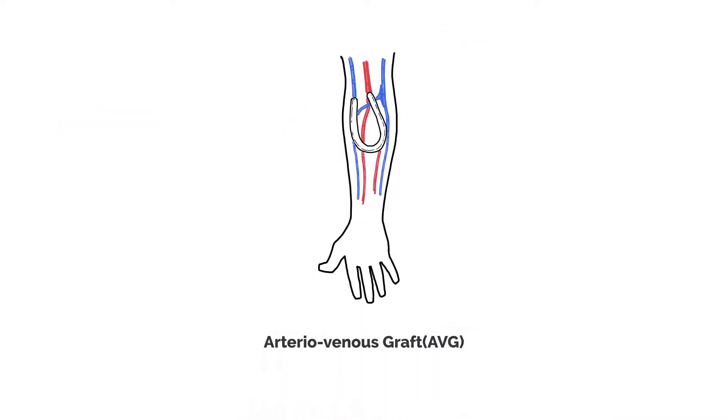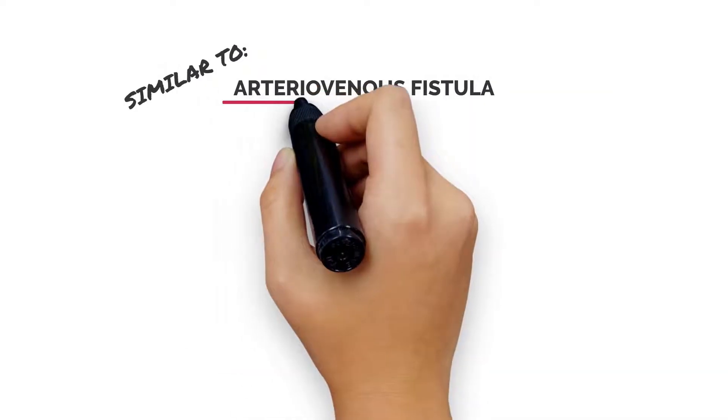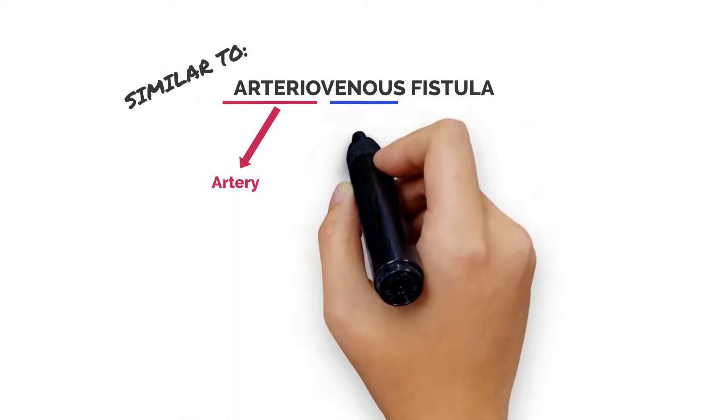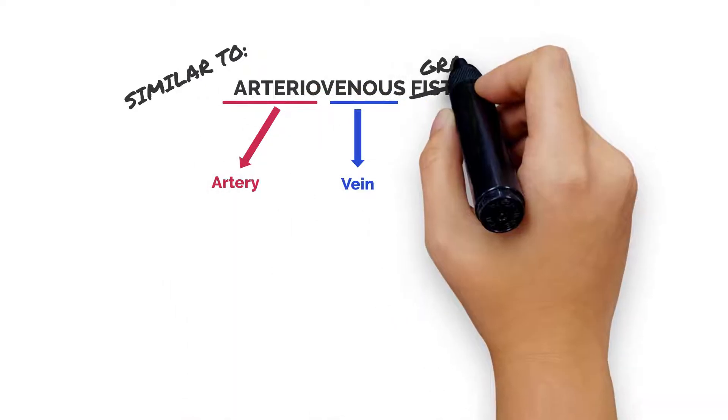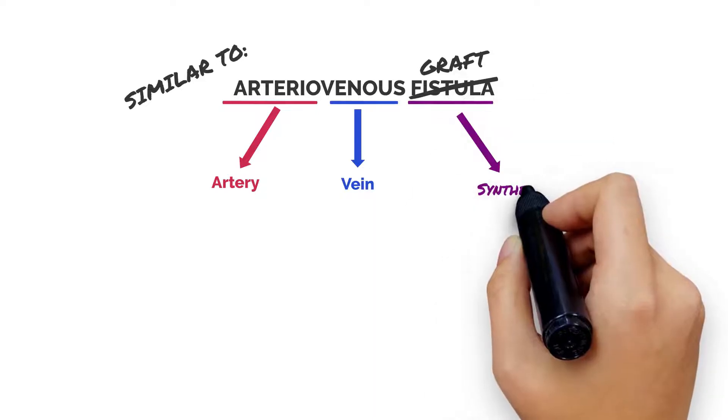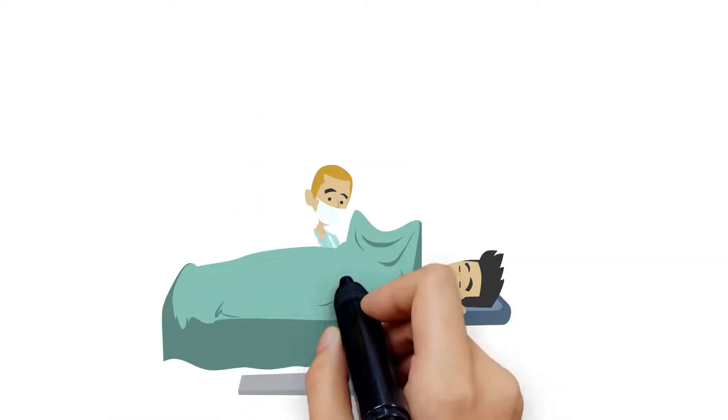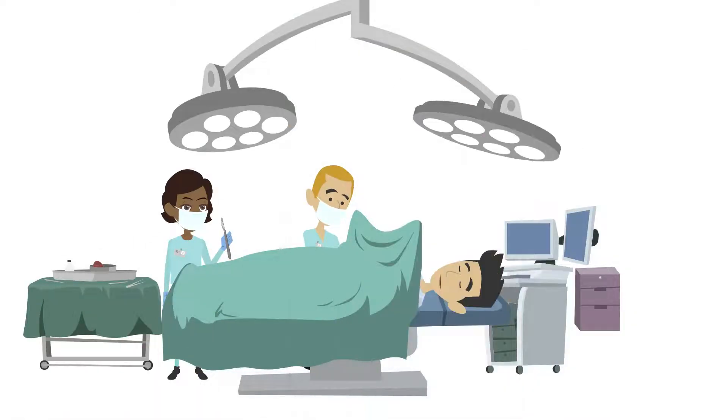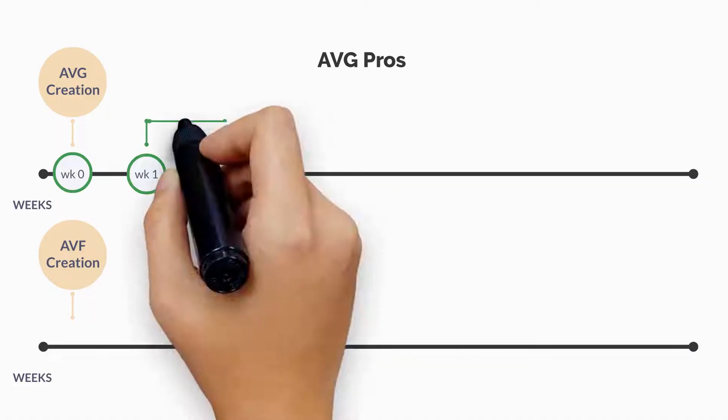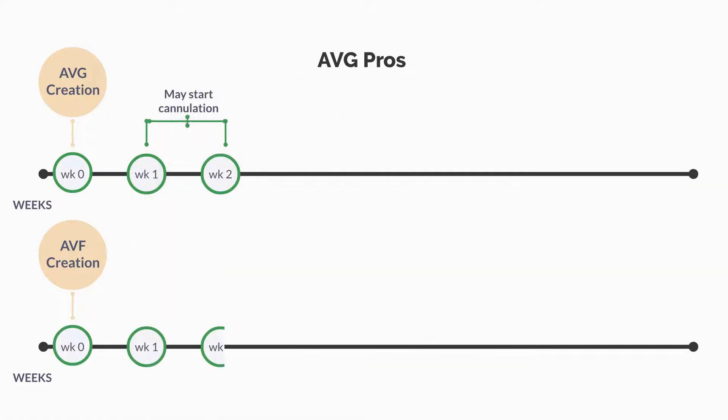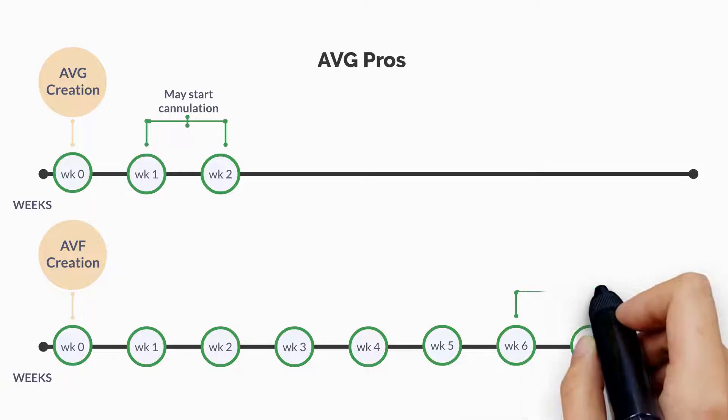The second type of access is the arteriovenous graft or AVG. This works similarly to an AVF, but instead of using your own vein, a synthetic tube connects the artery to the vein. The advantage of an AVG is that it can be used sooner, usually within one to two weeks after surgery, because it doesn't need time to mature like a fistula.